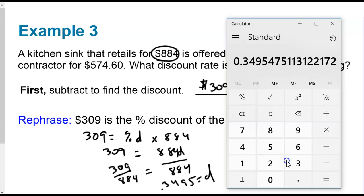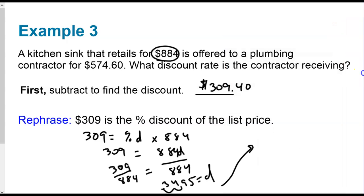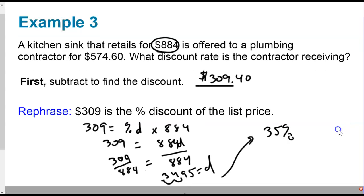Equals 0.3495. That equals a discount rate. And we know that that's a percent. So we'll bring that one, two over. And we'll say that that is 35% rounded up. And so the $309 is the percentage of the discount rate. And so the discount rate was 35%. Does that make sense?